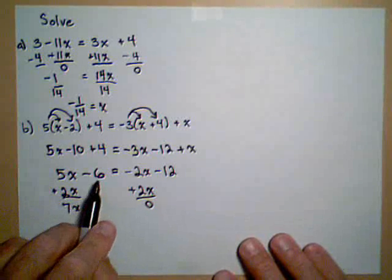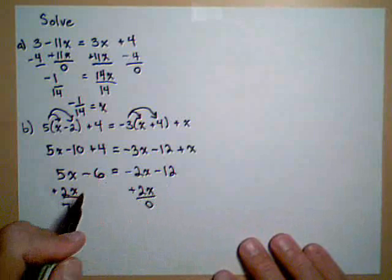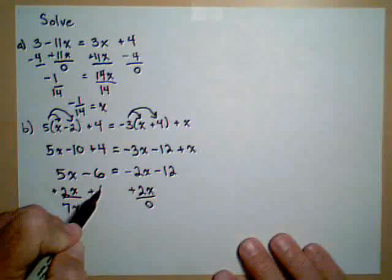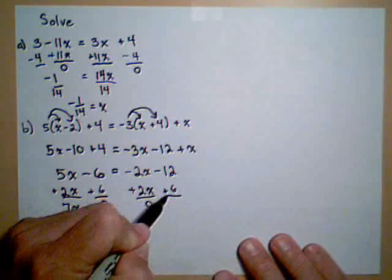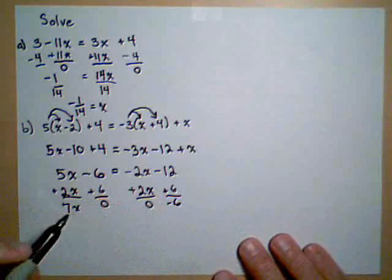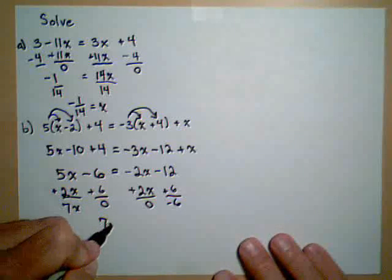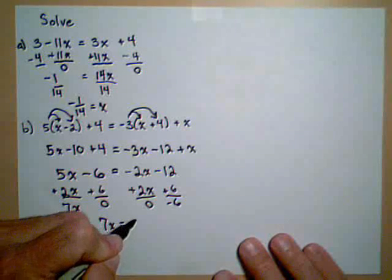Now because we put the x's over here, let's put the terms without x on the other side. So I add 6 to both sides. This is a negative 6 over here. So we end up with 7x equals negative 6.